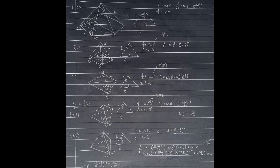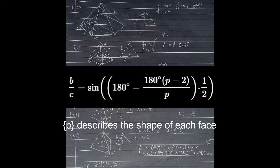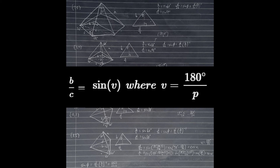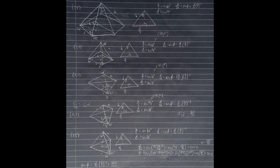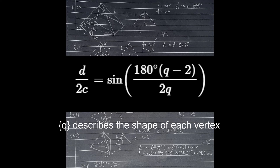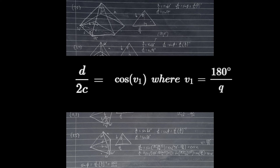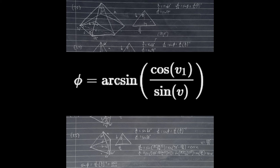Here are the figures describing the angle phi for each platonic solid. The value of B over C depends on the angles of the face of the polyhedron — specifically, B over C equals the sine of (180 minus the angle at the top) divided by 2, where P describes the shape of each face. We can simplify it to get sine V. Then the value of D over 2C depends on the angles of the polygon connecting the adjacent vertices — specifically, D over 2C equals the sine of half the angle of said polygon, where Q describes the shape of each vertex. We can simplify it to get sine(90 degrees minus 180 degrees over Q), or cosine V1. Now we take the arcsine of cosine V1 over sine V to get the value of phi.